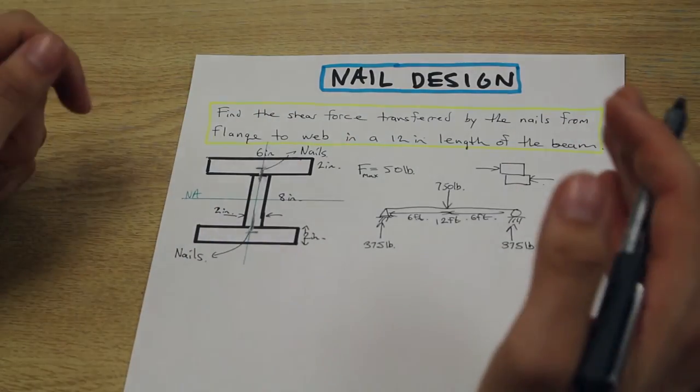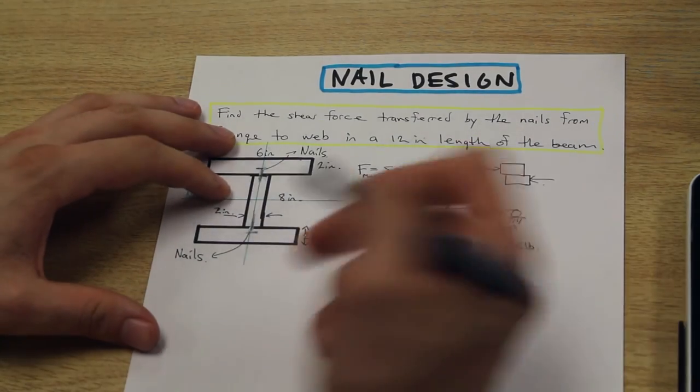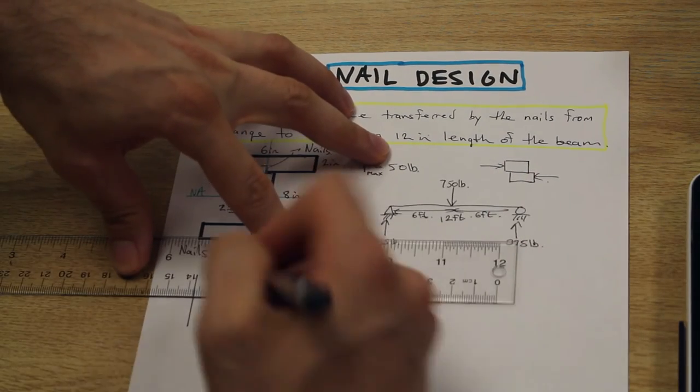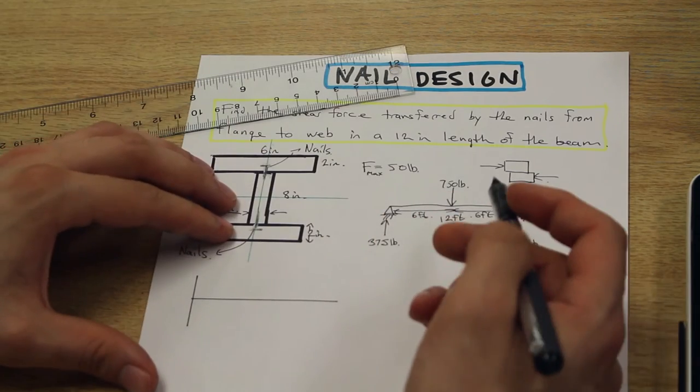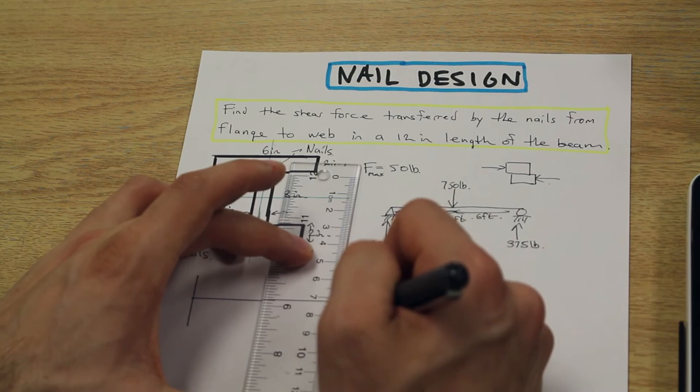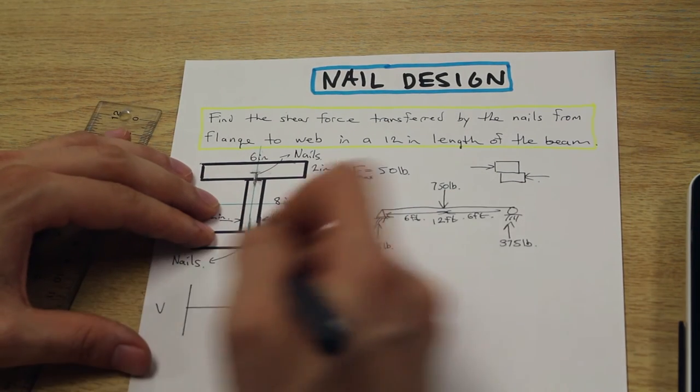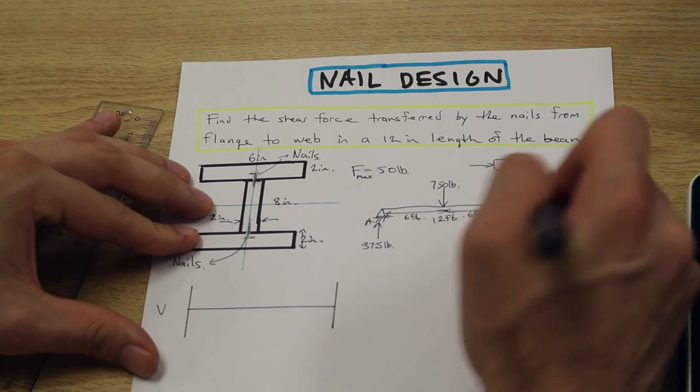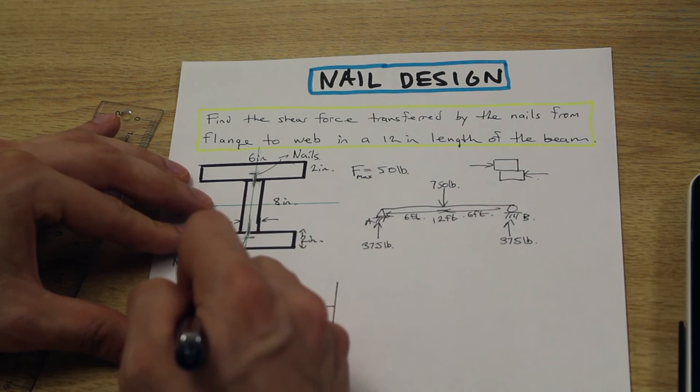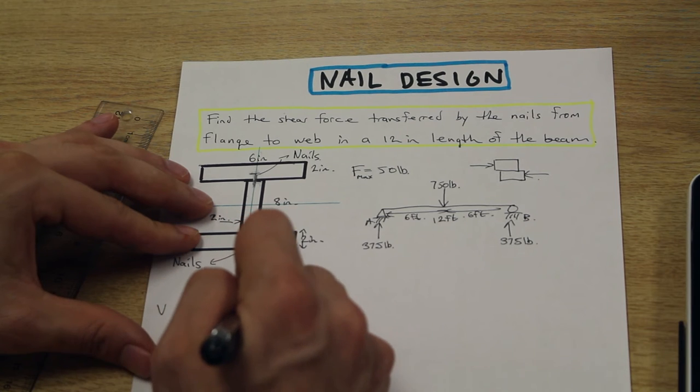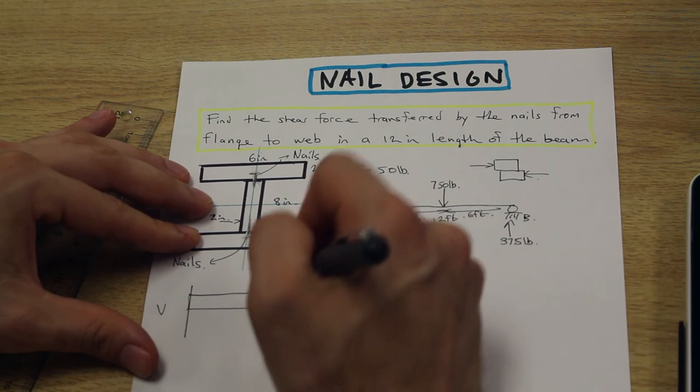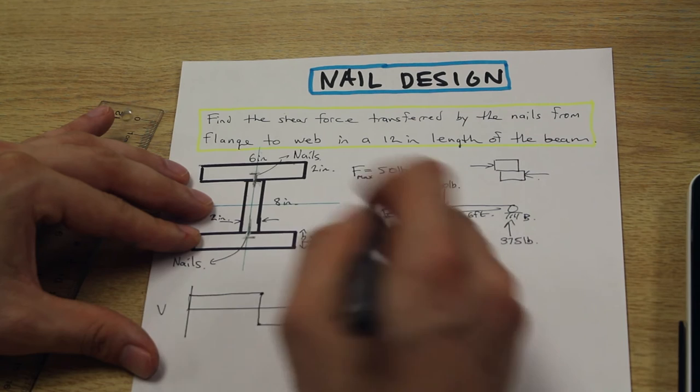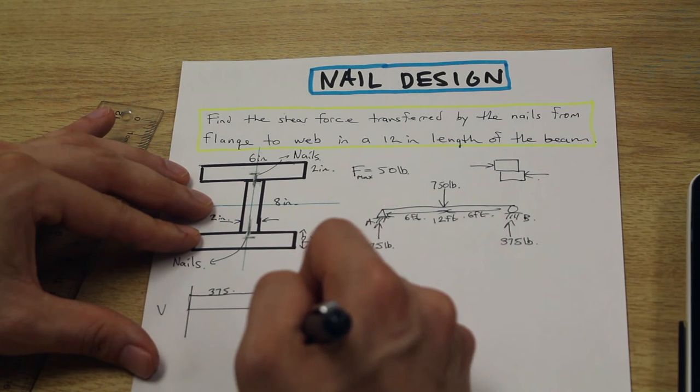We can draw a very quick shear diagram representing that. We don't need the bending moment diagram for this question, we just need the shear. We'll call this point A and that B. At point A, we're going to go up 375 pounds, across to the center, then down 750 to negative 375, go across, and then back up to zero. So this is 375 and negative 375.